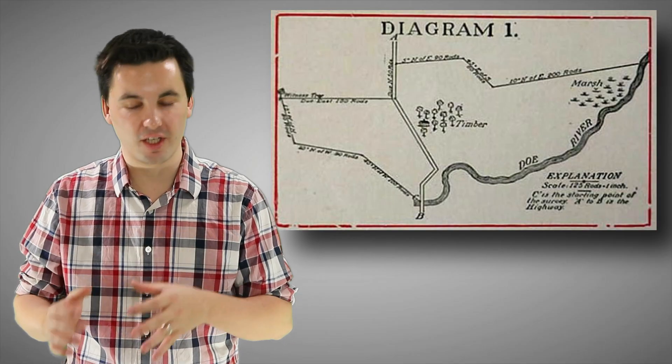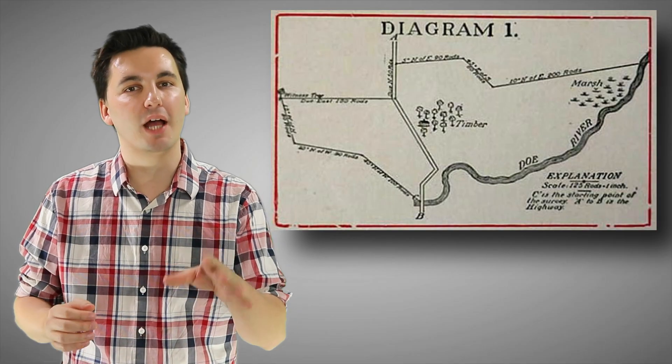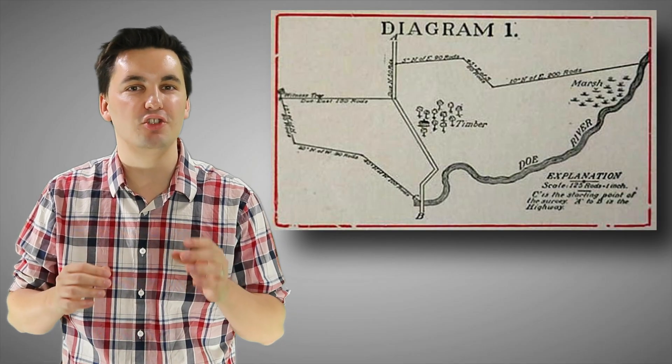So we've covered the different settlement patterns and now we're going to look at different survey methods used. We're going to go over metes and bounds, long lots, and township and range. Metes and bounds are often used for short distances and rely heavily on key geographic features of a place. Metes are often straight lines that connect different points of a geographic area, while the bounds are the key geographic features of an area.